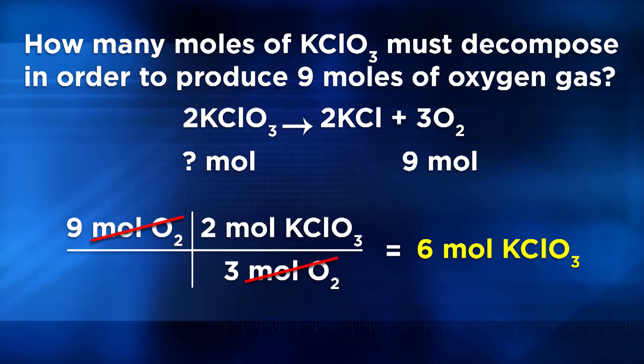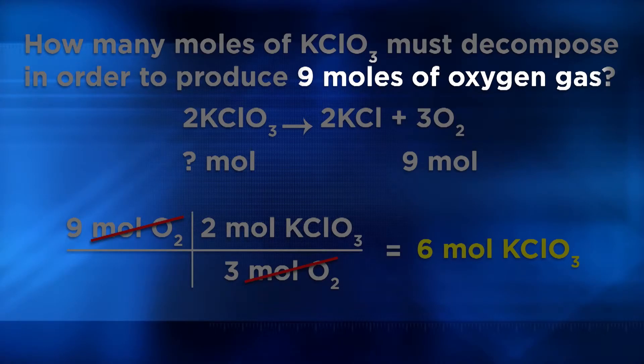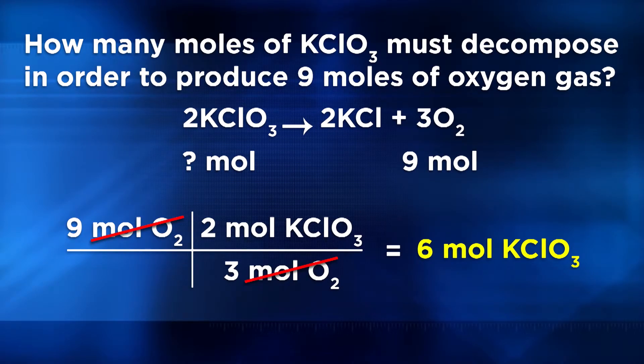These types of stoichiometry calculations are usually considered the easiest as there are very few steps involved. They're called mole-to-mole conversions because we were presented with moles of one substance in the reaction and asked to convert to moles of another substance. More complex stoichiometry problems involve what are known as mass-to-mass stoichiometric calculations. In a mass-to-mass stoichiometry problem, we're given the mass of one substance and asked to convert to the mass of another substance. There are multiple steps involved, but if you'll be systematic and let the units guide the conversion, you'll always find the right answer.